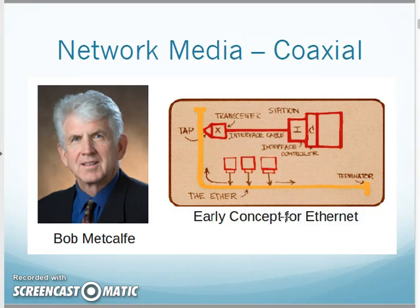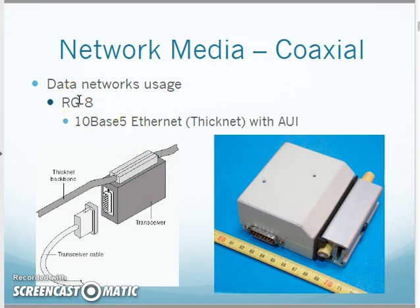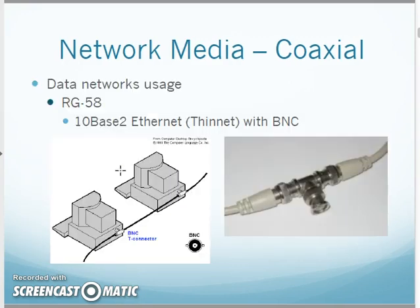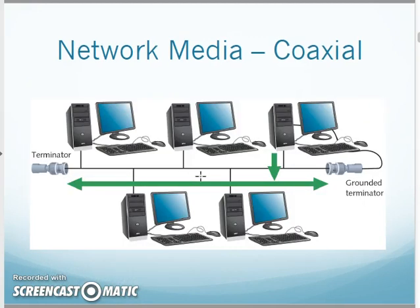Going back in time: with early Ethernet from Bob Metcalfe, your 10-Base-5 networks had coax cable with a transceiver that bolted around the cable — this was RG-8, thicker than what you have in your house. The transceiver that bolted around that cable was pretty significant in size, about the size of your index fingers or larger. As time went on, we got thinner coax — RG-58 — used for thinnet Ethernet with BNC connectors and T-connectors connecting back to PCs, making your bus network.